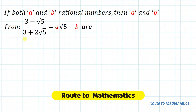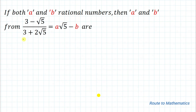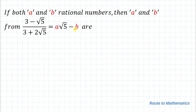Hello everyone, welcome to my channel Root 2 Mathematics. In this video we are going to solve an interesting problem from number system. The given question is: if both a and b are rational numbers, find a and b from (3 minus root 5) divided by (3 plus 2 root 5) equals a root 5 minus b.